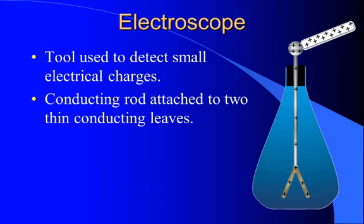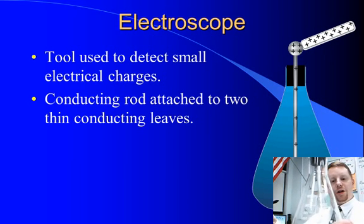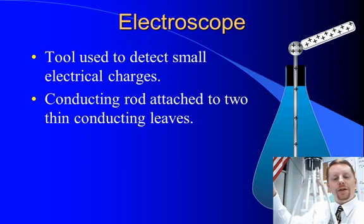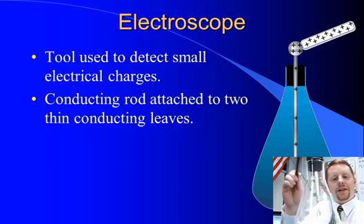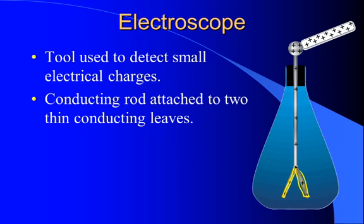One tool we can use to detect electrical charges is known as an electroscope. It looks like what you see here on the right: you have a beaker of some sort, inside it is a conducting metal rod, and that rod is connected to two very thin conducting leaves. If you touch a charge to the top, that charge distributes through the conductor — the two leaves each see the same charge, and since like charges repel, the leaves spread apart. I have a charged rod here — as I bring it into contact with the electroscope, you can see the leaves spread apart as charge is added.